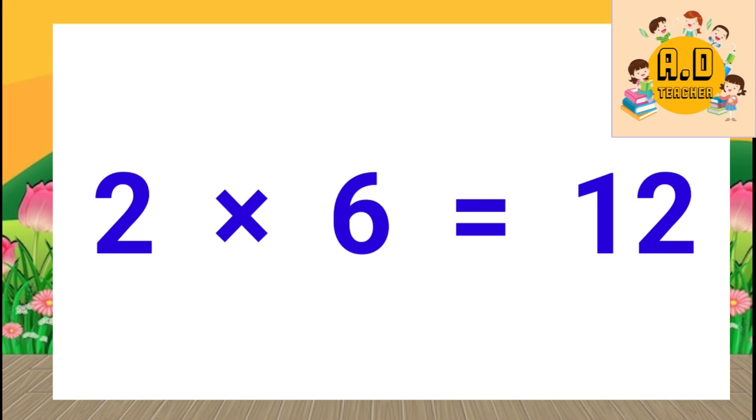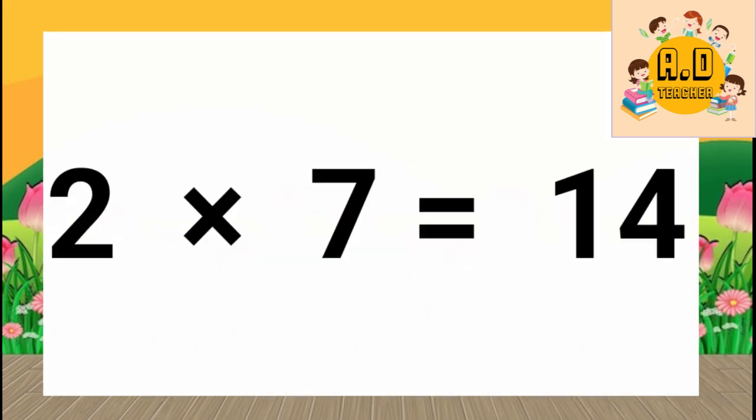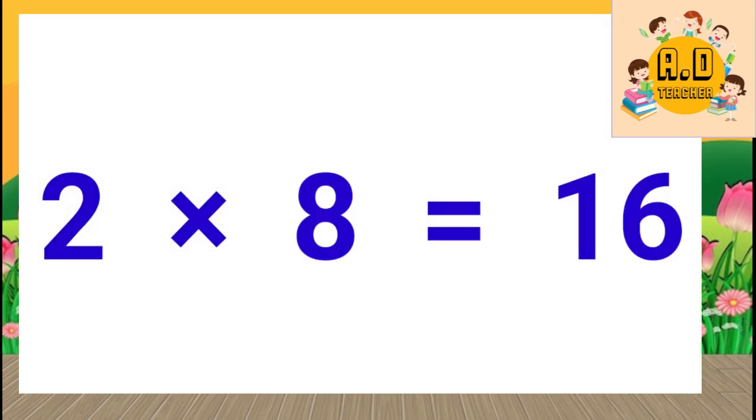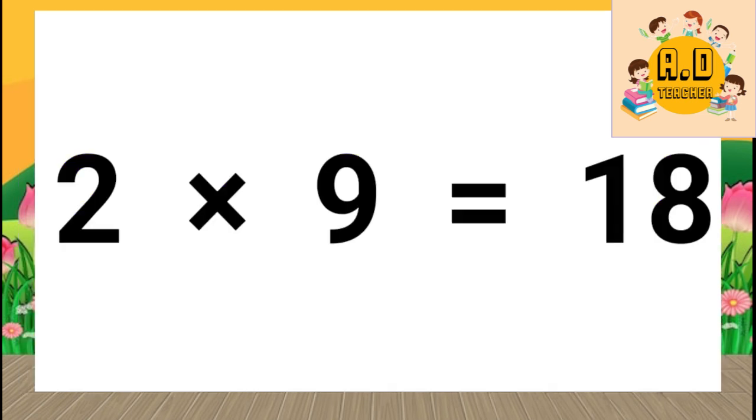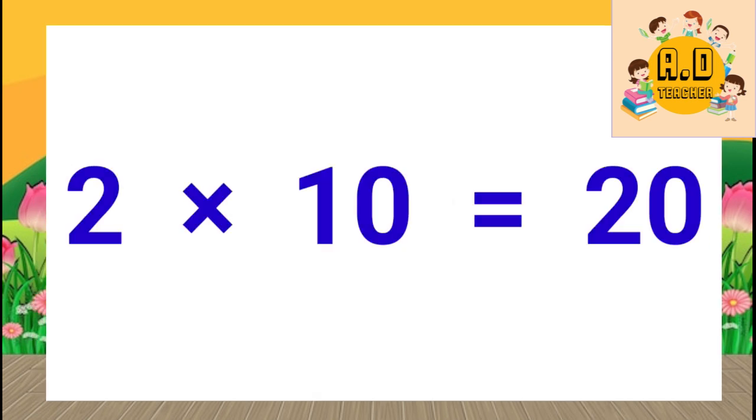2 sixes are 12, 2 sevens are 14, 2 eights are 16, 2 nines are 18, 2 tens are 20.